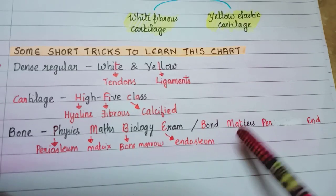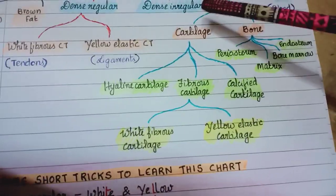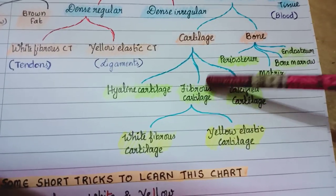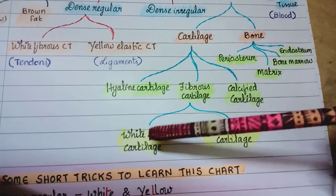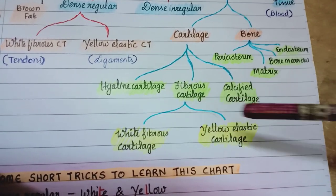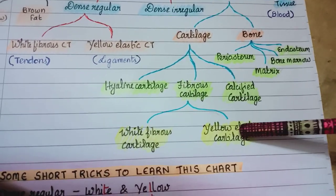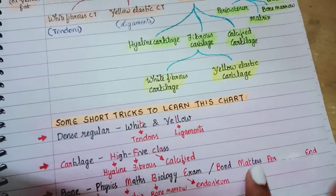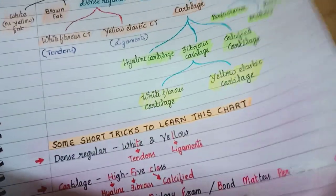In cartilage, fibrous cartilage is again classified into white fibrous cartilage and yellow elastic cartilage. So that is the flow chart of connective tissue. Now let's move on to other short tricks.